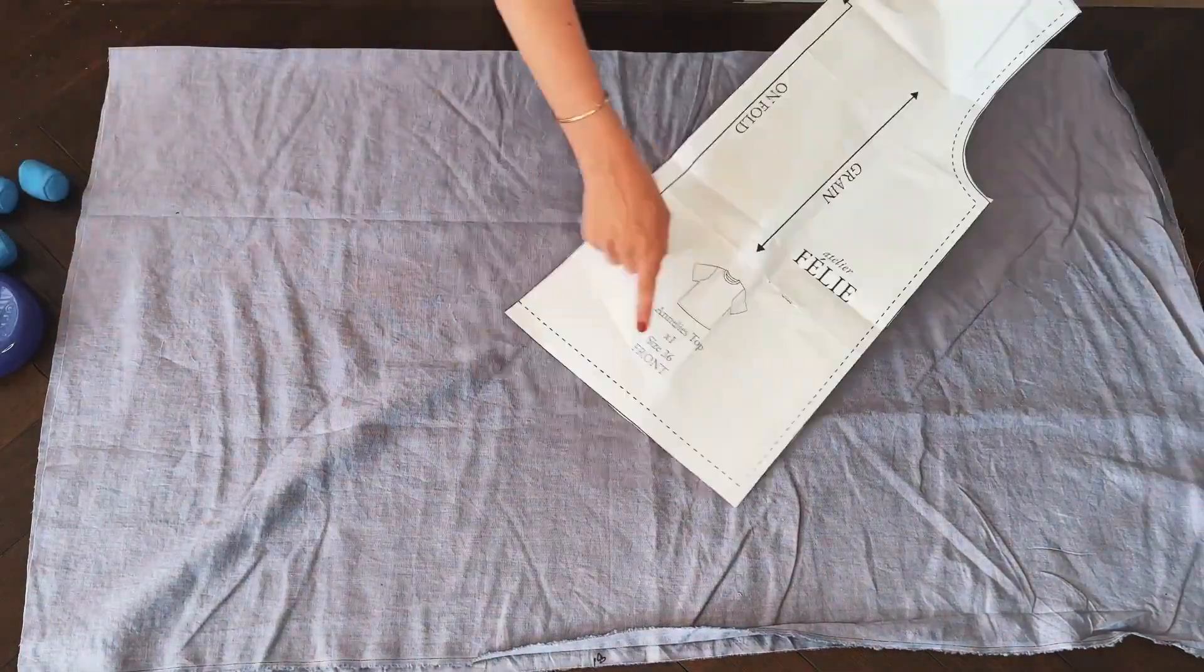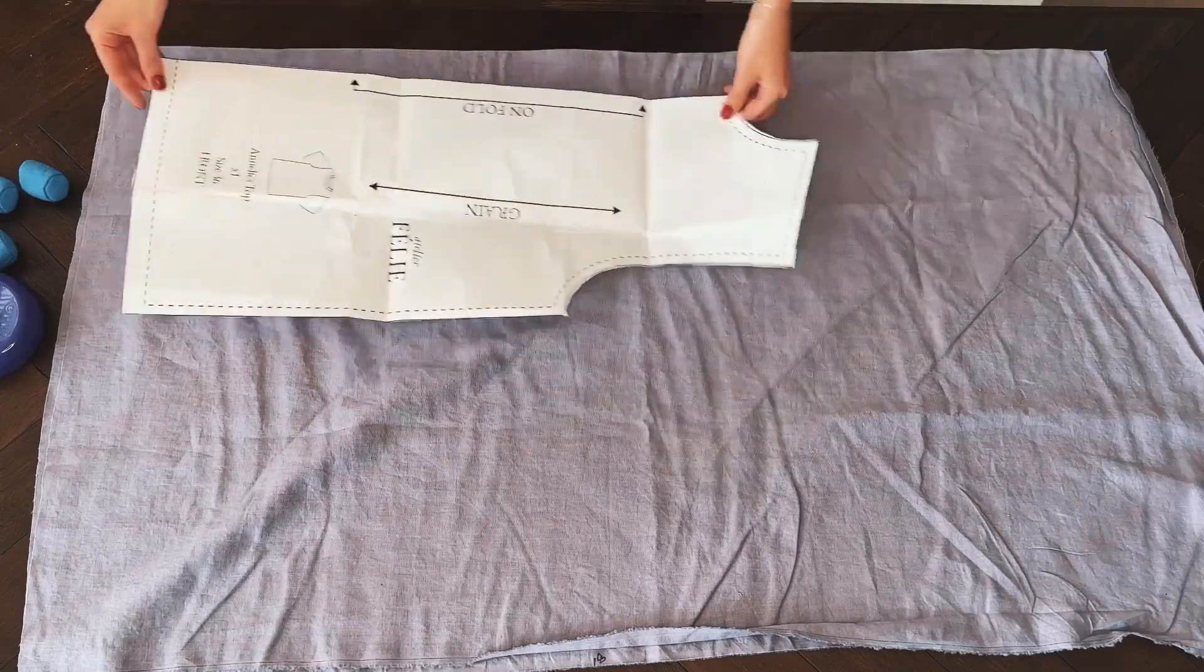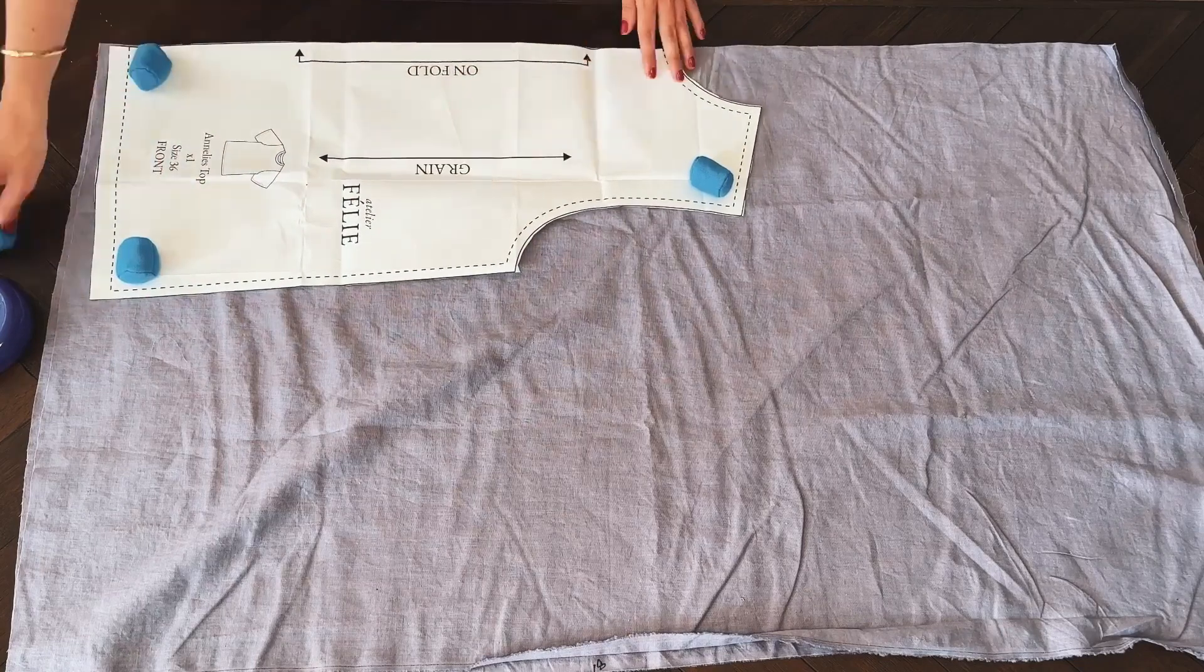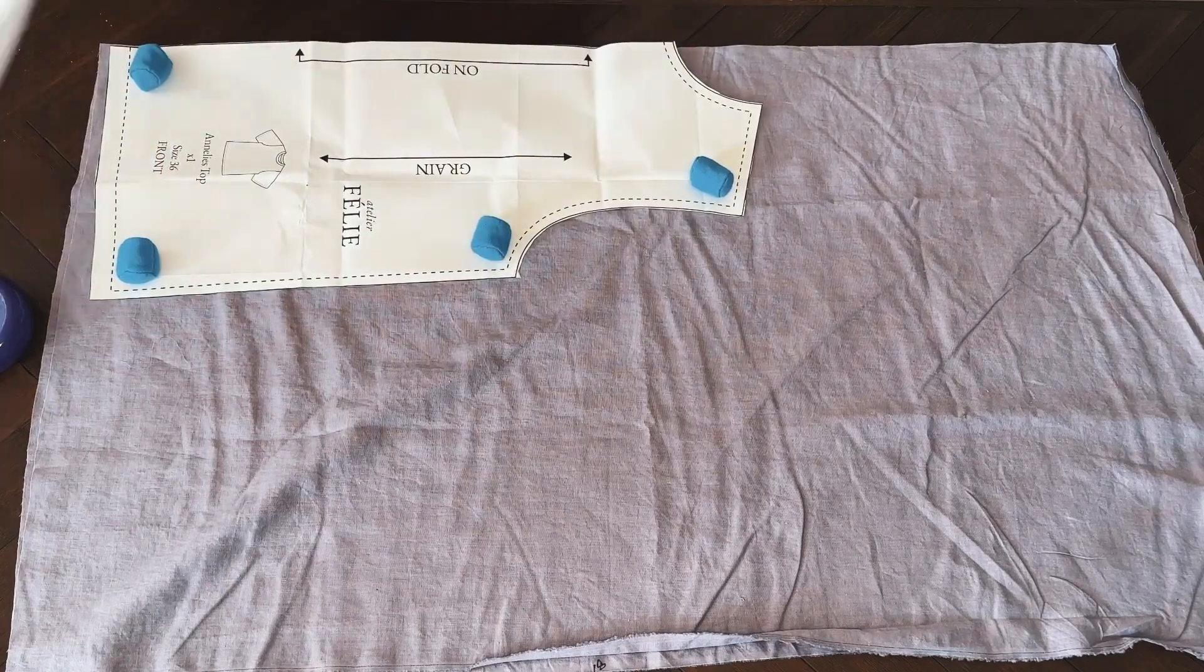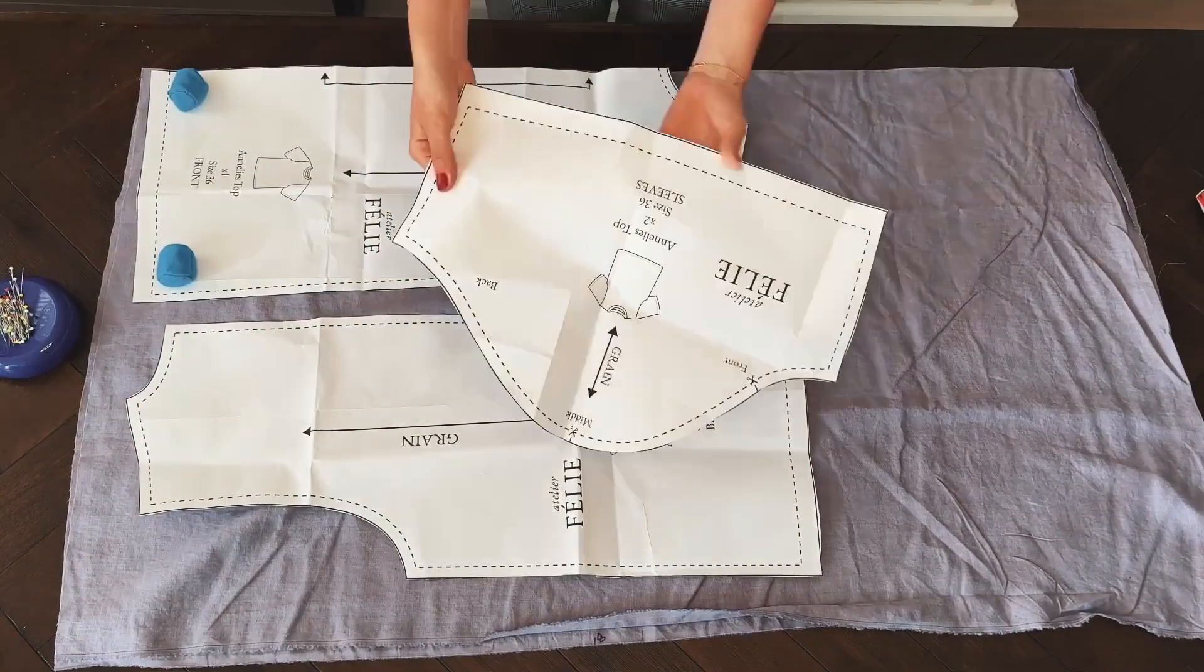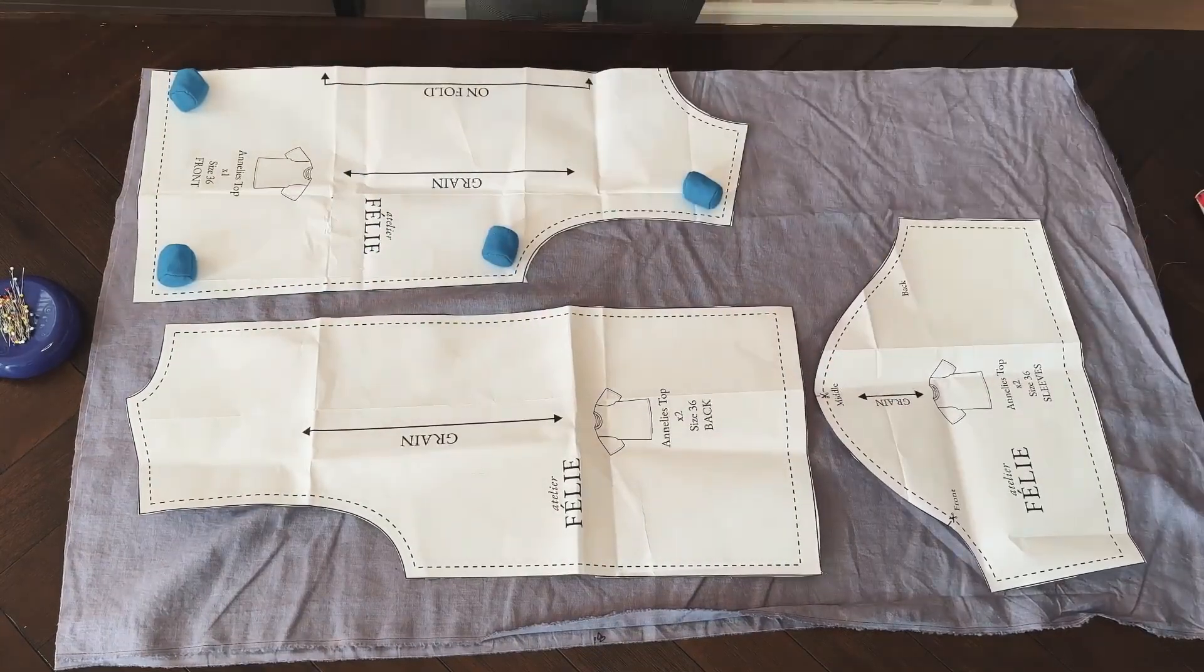Then put the side of the front piece of the shirt that says fold on that fold line. Put the weights on the pattern to ensure the pattern stays in place. Put the back piece of the shirt next to the front piece and the sleeve and strap on top, aligning the grain line with the fold line of the fabric.